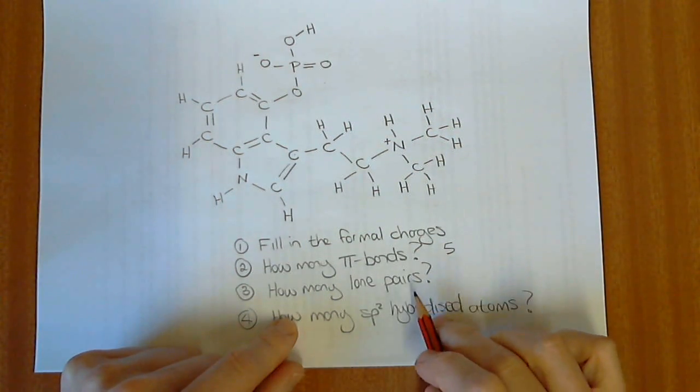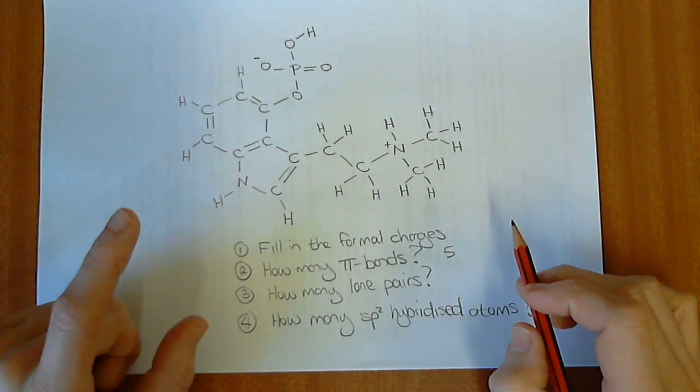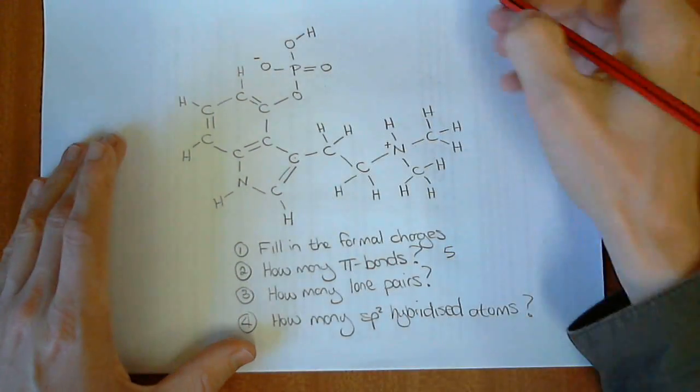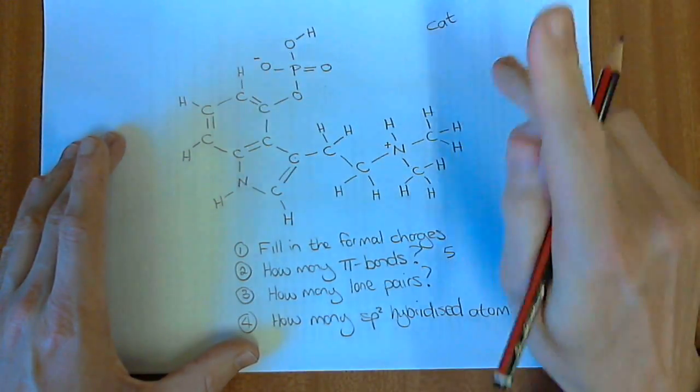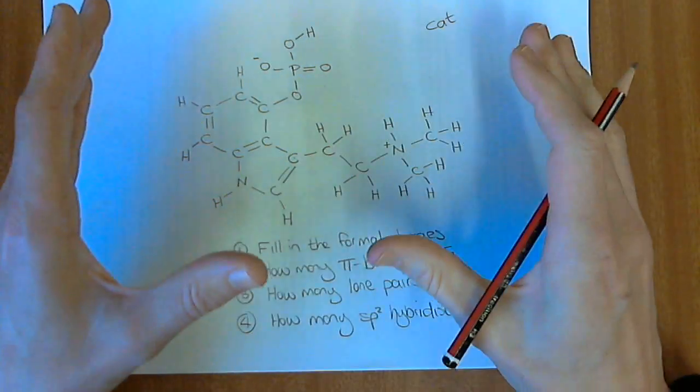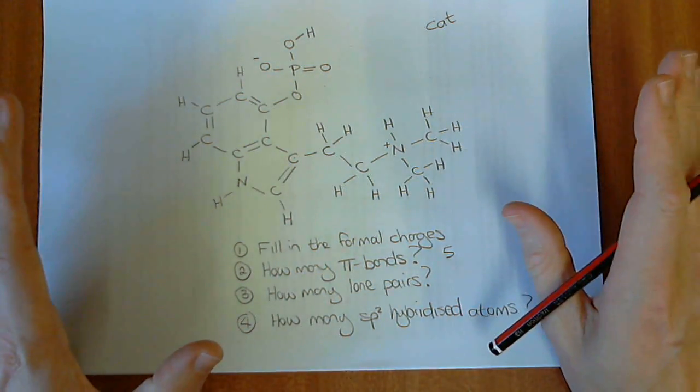How many lone pairs? This is something that can be very difficult, and people do struggle with this. And we need to be able to, just like when we see the word cat, we're immediately able to associate what this is. In organic structures, in chemical structures and molecules, we need to be able to see the atoms that have lone pairs.